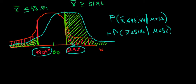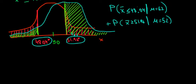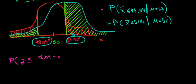Now let's work out the math. We're looking for probabilities, and to find probabilities we need to standardize values. We're going to standardize from x into z, meaning we want the probability of having a z value less than or equal to the standardized form: we take the difference between the sample mean 48.04 minus the population mean of 52, relative to the standard error, which is the standard deviation of 6 divided by the square root of n, divided by the square root of 36.